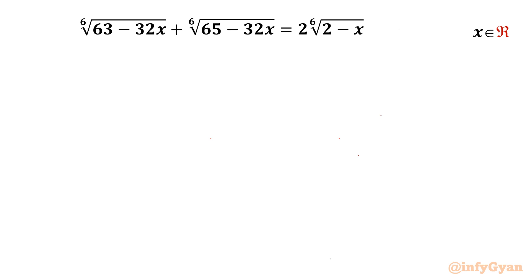Welcome to InfiGyaan, my dear friends. Today in this video we are going to take up one very interesting and challenging radical equation problem: 6th root of (63 minus 32x) plus 6th root of (65 minus 32x) equals twice the 6th root of (2 minus x). We have to find out real solutions only.